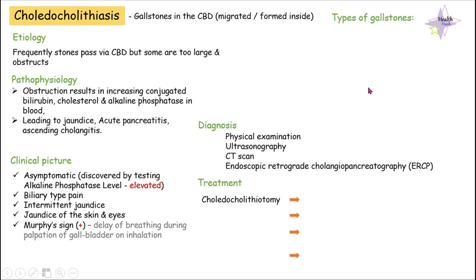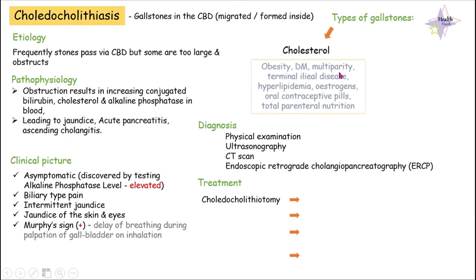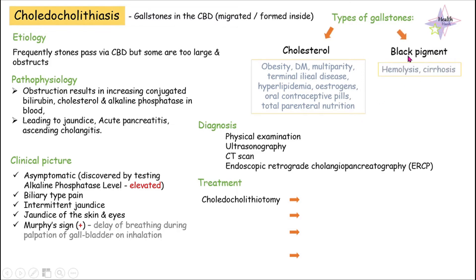Let's see what types of gallstones we have. We basically have two types. The first type is cholesterol gallstones, usually seen in patients with obesity, diabetes mellitus, multiparity, terminal ileal diseases, hyperlipidemia, or patients who take estrogens, oral contraceptive pills, or are on total parenteral nutrition. The next type is black pigment stones, which usually occur when there is hemolysis or cirrhosis in the patient.